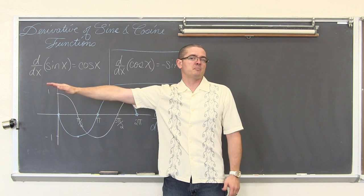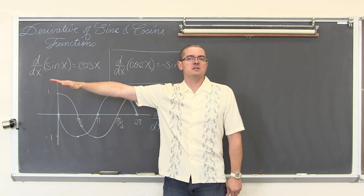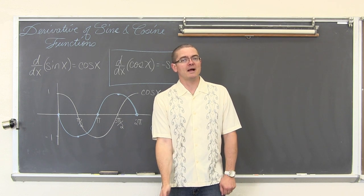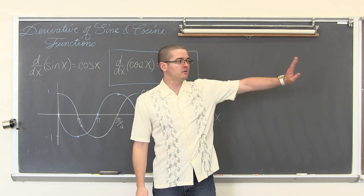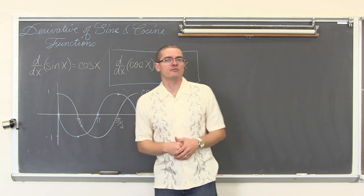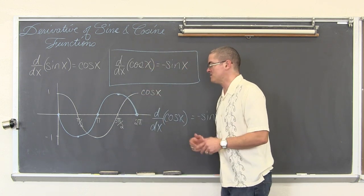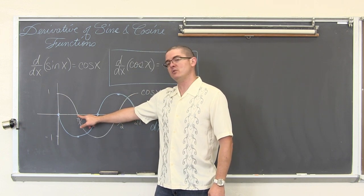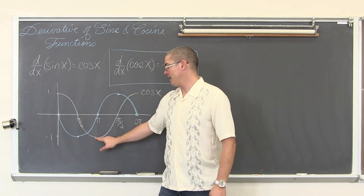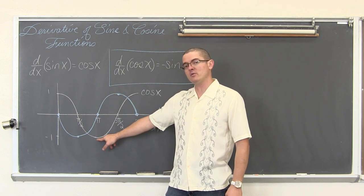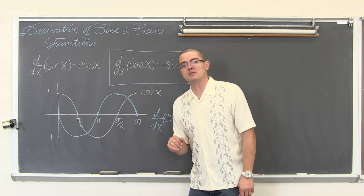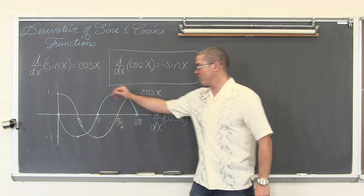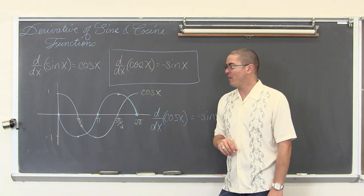The cosine of pi over two is zero over one, so it is zero. The cosine of pi, 180 degrees, is negative one. The cosine of three pi over two or 270 degrees is back to zero. Then you go back to zero radians and get to one. So the cosine goes from one at zero, to zero at pi over two, to negative one at pi, to zero at three pi over two.